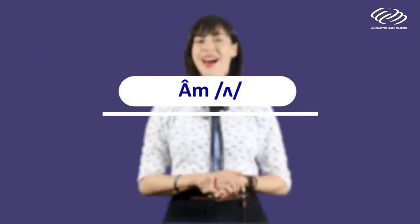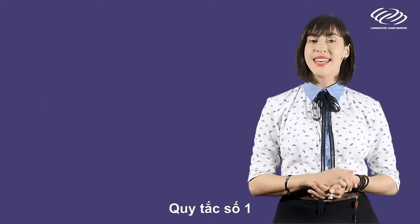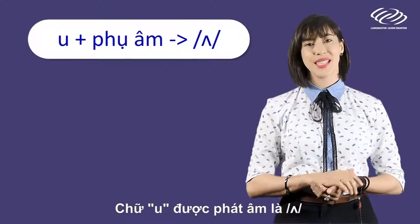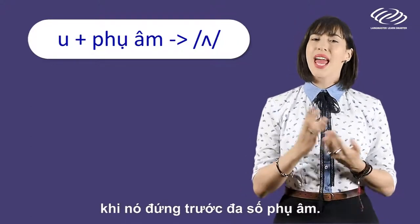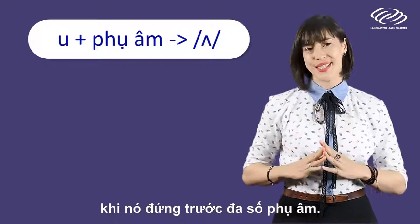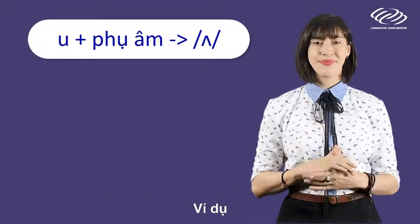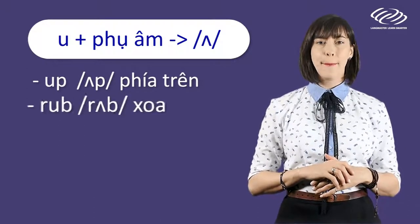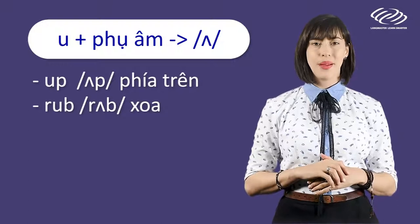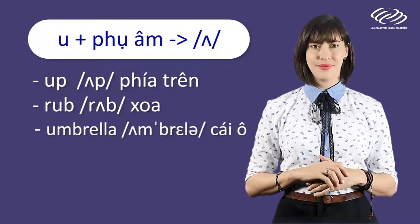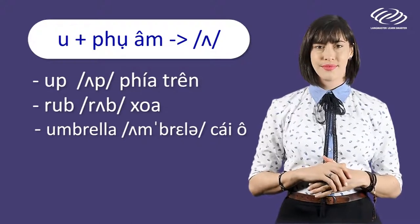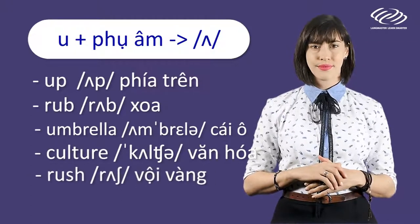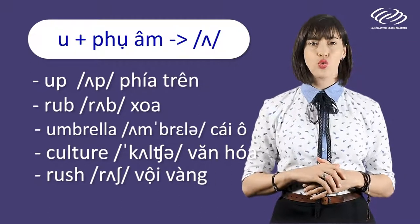The AH sound. Number one: U is pronounced as an AH sound when it comes before most consonants. For example: up, rub, umbrella, culture, rush.